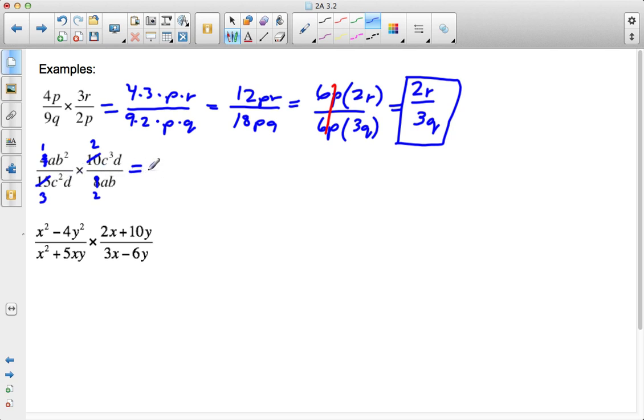So now when I go ahead and multiply, I'm left with 1ab², so ab² times 2c³d. Then I'm left with 3c²d times 2ab. Well, what I see again is that my 2s can cancel each other out. And so now what I'm left with is ab²c³d over 3abc²d.